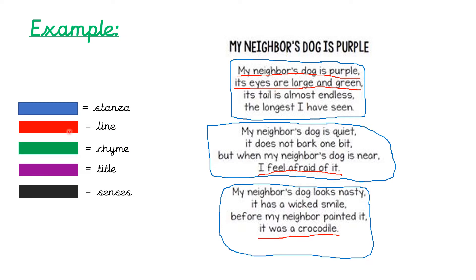Next we move on to rhyme. I'm going to read the first stanza and I'd like you to think about whether any of the words rhyme — whether any words sound the same as each other. My neighbour's dog is purple, its eyes are large and green. Its tail is almost endless, the longest I have seen. I can hear two rhyming words in there, and that was green and seen.